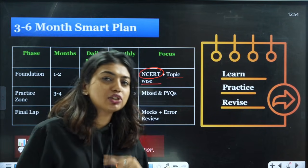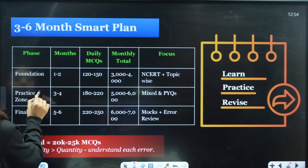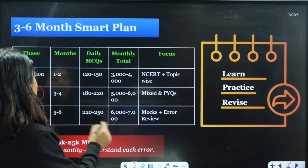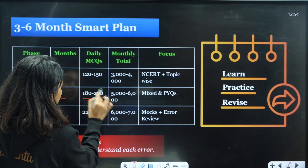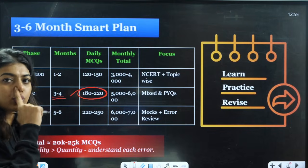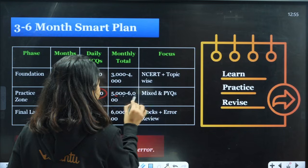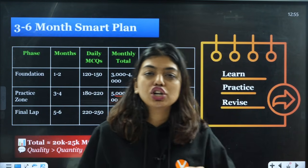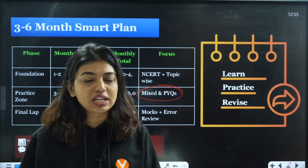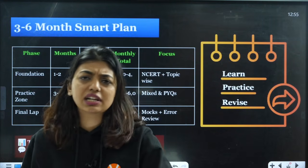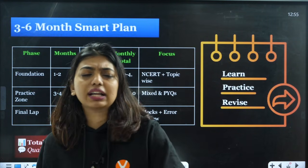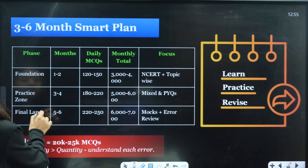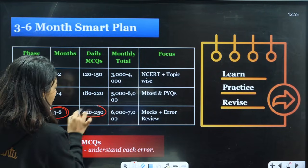In the practice zone, that is three to four months (when the heat is very high, Jan-Feb time), he used to solve 180 to 220 questions per day. That used to go to 5,000 to 6,000 questions monthly. He used to do mixed plus PYQs—not just previous year questions but other random questions as well: assertion-reason, statement-based, NCERT-based questions, achievers questions.